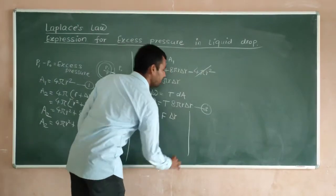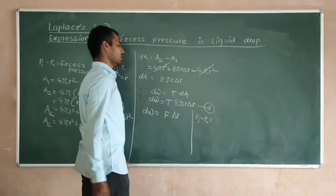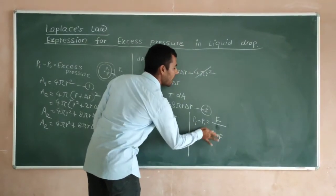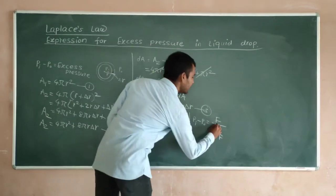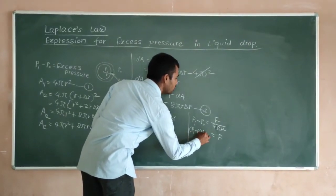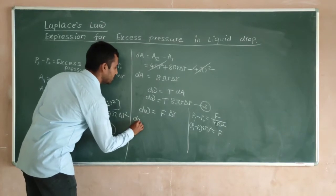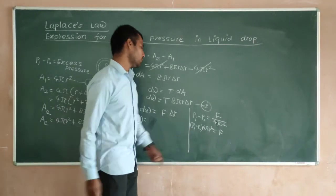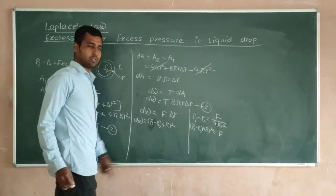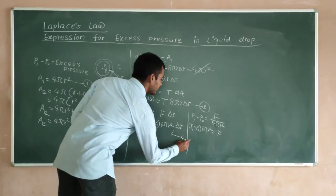Here the pressure gives rise to a force. The force is (Pi − Po) × 4πr², since the area of the sphere is 4πr². So putting this value of force into the work equation, we get dW = (Pi − Po) × 4πr² × δr. This is equation number 4.